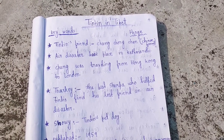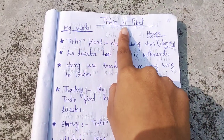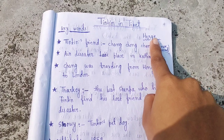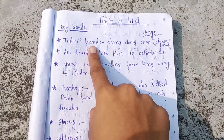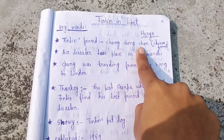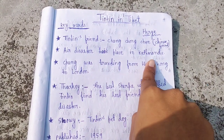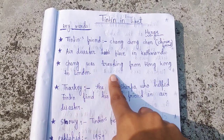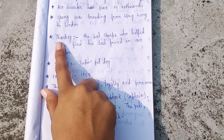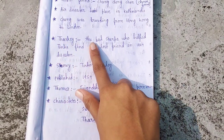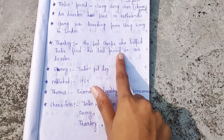Let us start with the key points of this chapter. Tintin in Tibet is written by Harj, who was a cartoonist. Tintin's friend named Chang Chong Chen is a Chinese friend. An air disaster took place in Kathmandu — Chang was traveling from Hong Kong to London. Another character is Tharke, the best Sherpa, who helped Tintin find his lost friend after the air disaster.